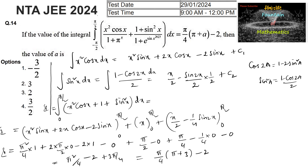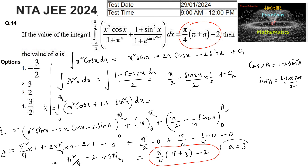Comparing with the given expression π/4 · (π + a) − 2, we have a = 3. So the value of a is 3.